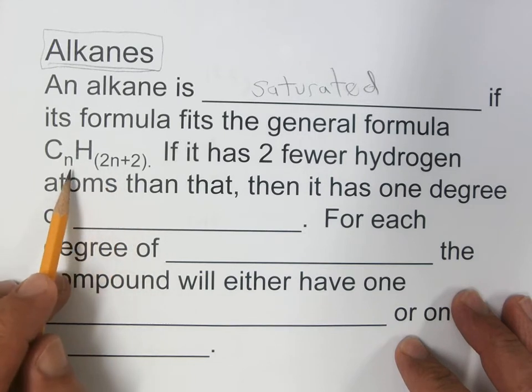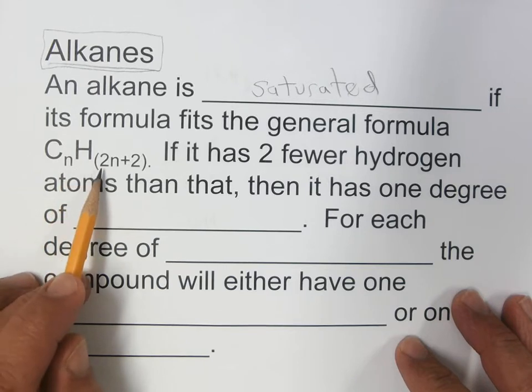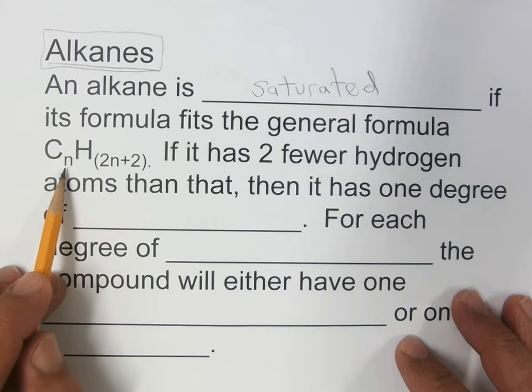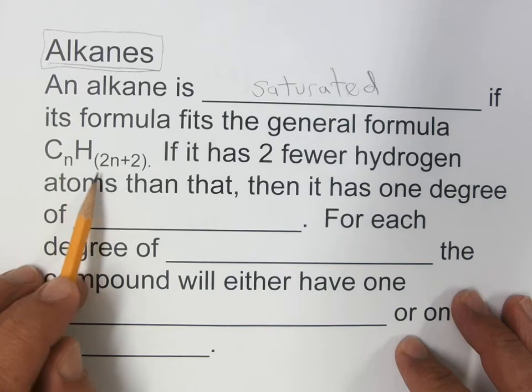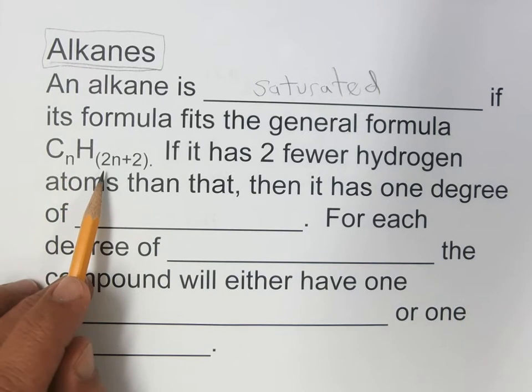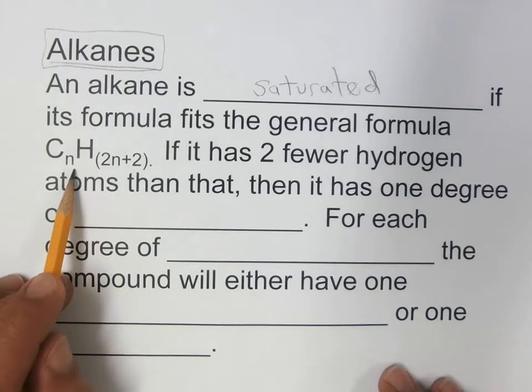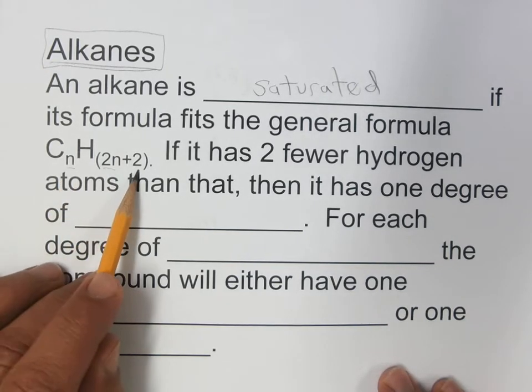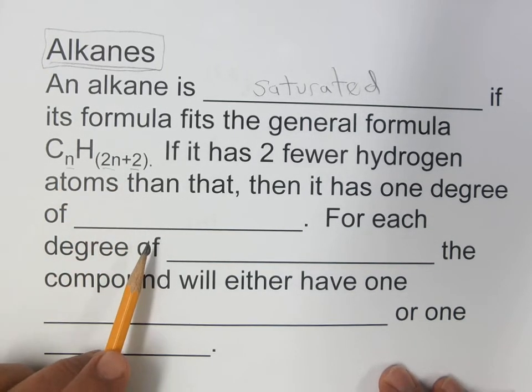We went over this with some examples last time, where if you have methane you'll have C1H4, ethane C2H6, propane C3H8. And in each case, the number of carbons times 2 plus 2 gives the number of hydrogens.